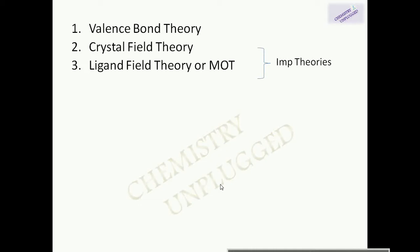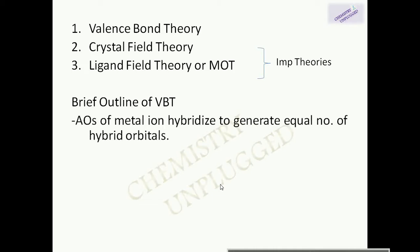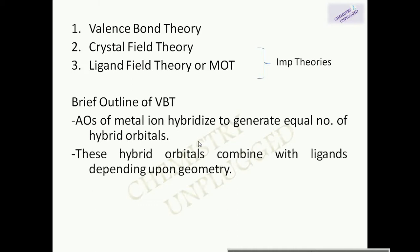Before starting crystal field theory, we should know why valence bond theory was rejected, so we will discuss a brief outline of valence bond theory. According to valence bond theory, atomic orbitals of the metal ion hybridize to generate an equal number of hybrid orbitals. These hybrid orbitals combine with ligands depending upon the geometry of the complex.